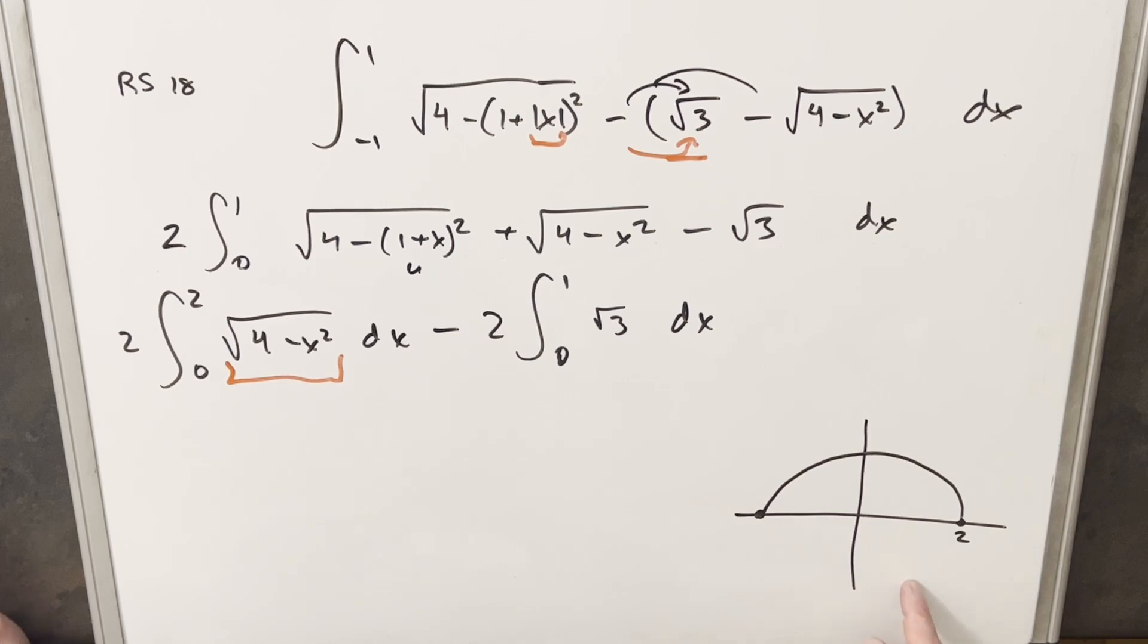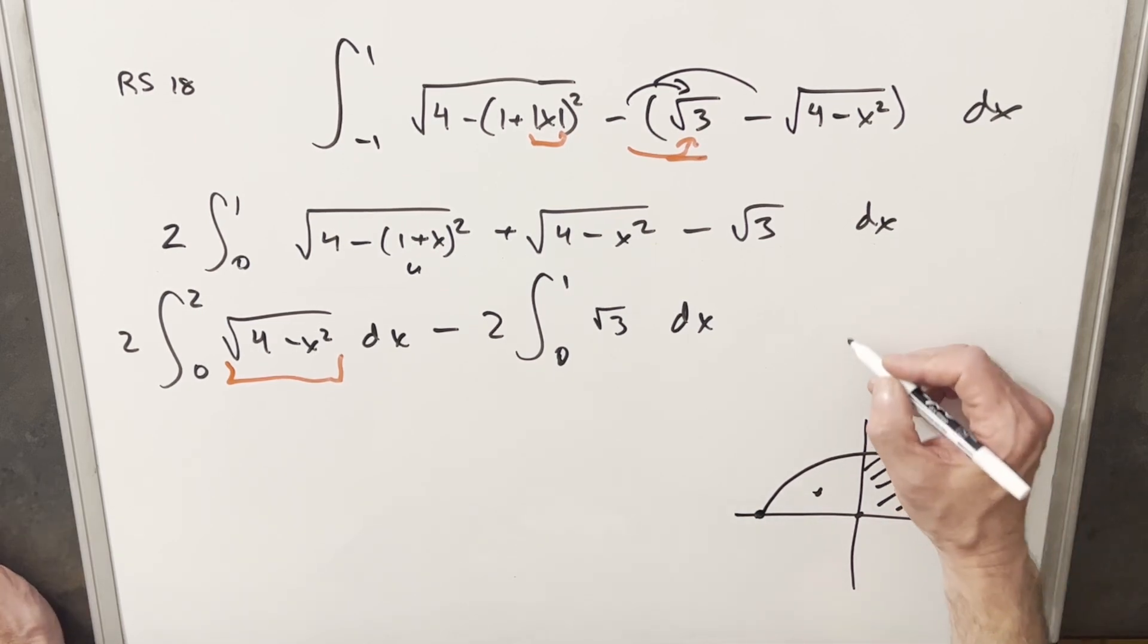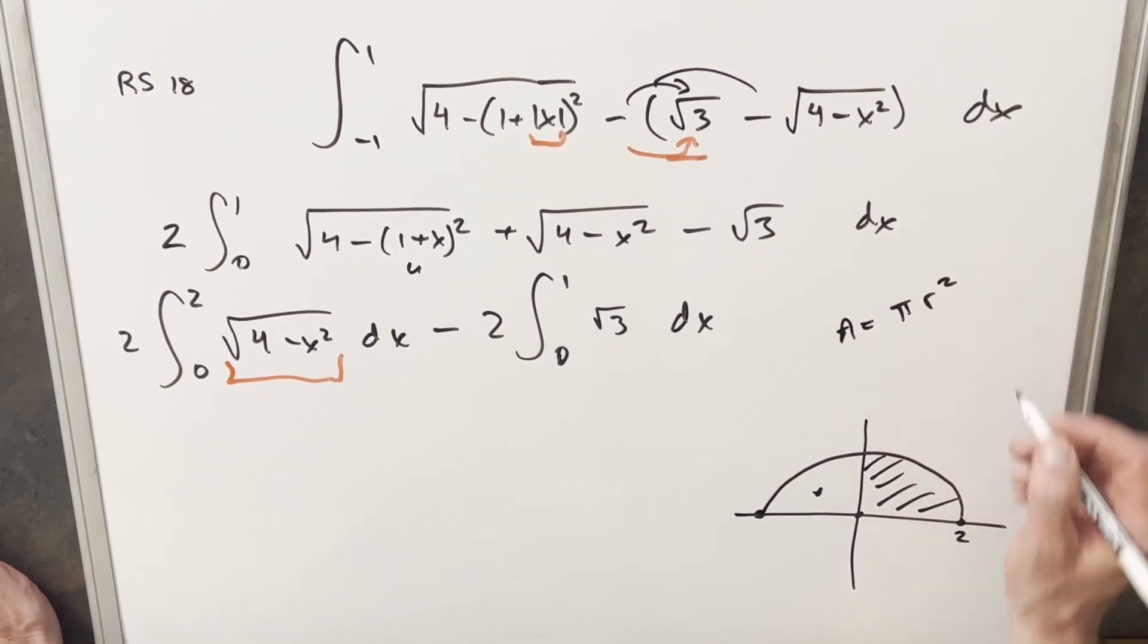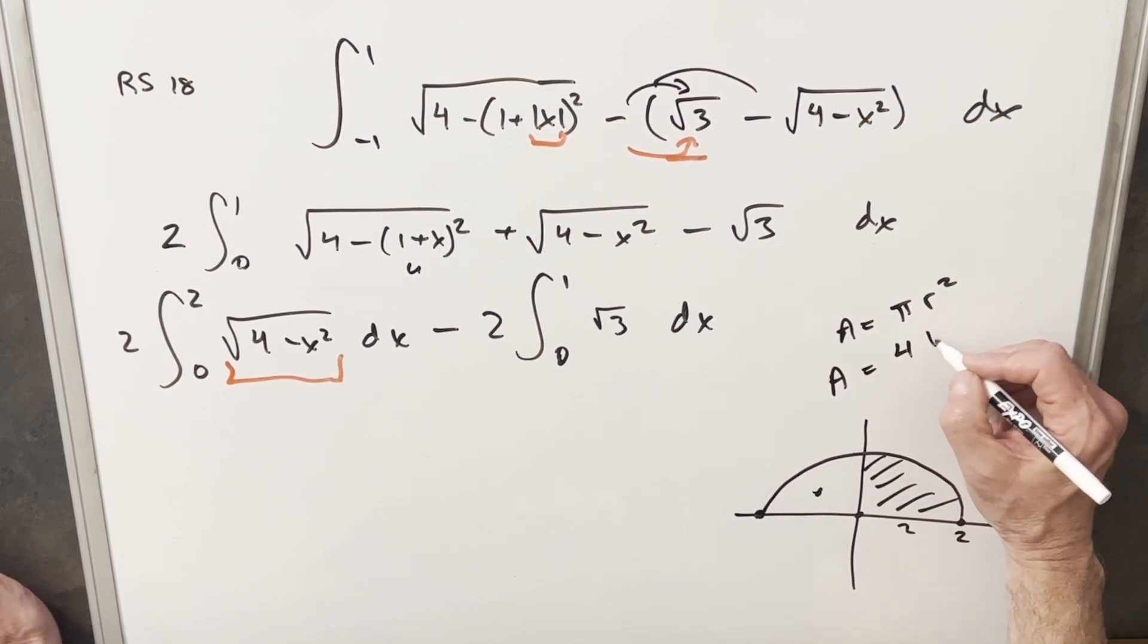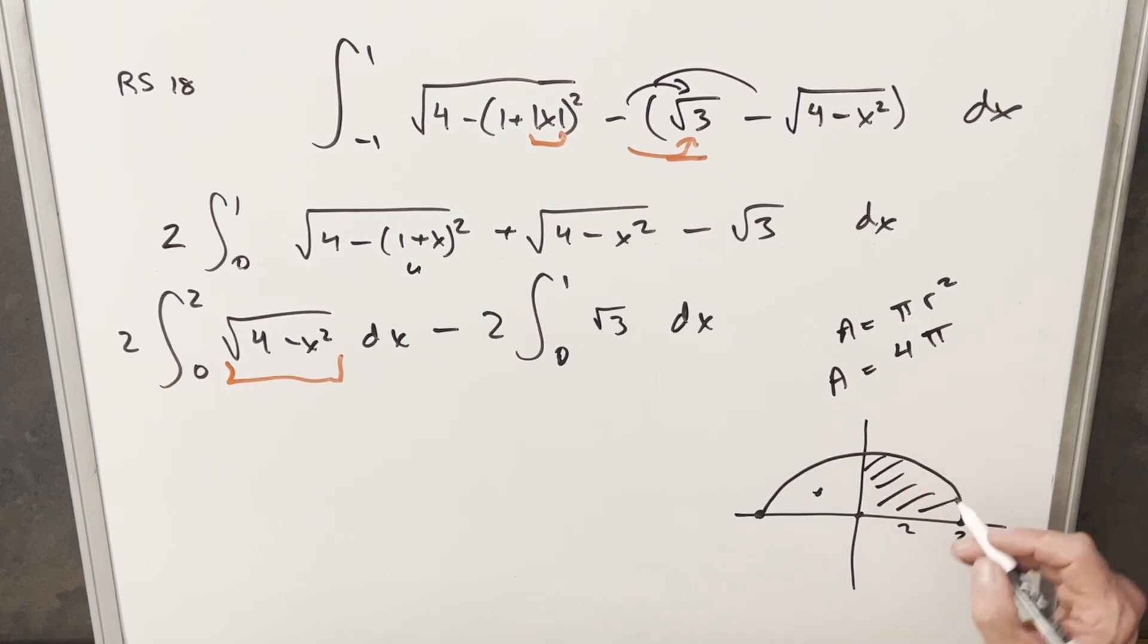We have the graph of this over here to the right. Notice it's just the top half of a circle. Our bounds are from zero to two. What we're looking for is this area right here - we just want this quadrant of the circle. Since we know the area of the circle, we can use our A equals pi r squared formula. The radius is going to be two, so our area of this is two squared times pi, which is four pi. But because we just have one quarter of the circle, it's not going to be the full four pi, it's going to be a fourth of that, which gives us just pi.